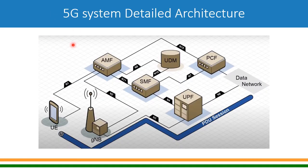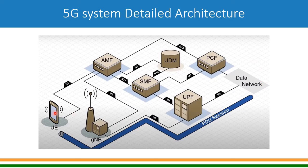Let us look at the 5G system in slightly more detailed architecture. You have UE and then G Node B — equivalent to E Node B in 4G, here called G Node B. Then you have User Plane Function and the data network. The actual data traffic from mobile flows from UE to G Node B to User Plane Function to the data network.